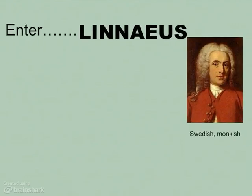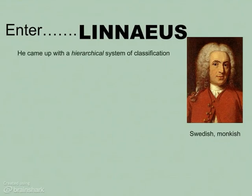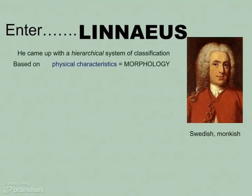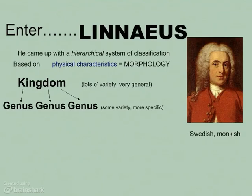These different classification systems weren't very usable. This guy, Carolus Linnaeus, or Carl von Linnaeus, he was a Swedish monk. He came along and developed a different way of organizing organisms into different groups. His system was hierarchical, meaning that they were kind of nesting. He broke organisms up based on their physical characteristics or morphology into large groups called kingdoms, which would be like plant and animal kingdom. These different kingdoms were broken up in his day into different genera — which is the plural for genus — so in a kingdom, there would be a lot of variety, like in the animal kingdom, both humans and sponges are in the same kingdom.